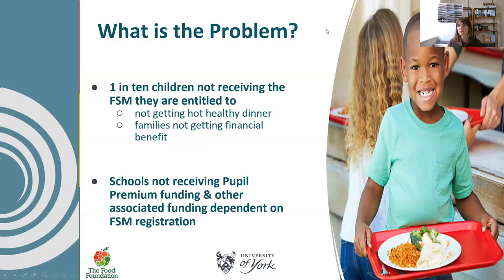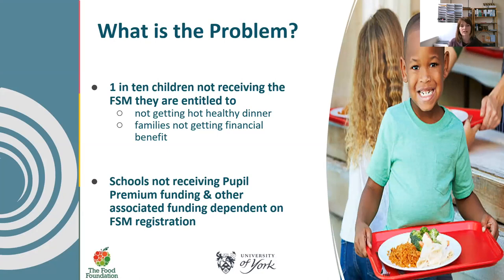About one in ten children don't receive the free school meals they are entitled to, and therefore fail to get that hot, healthy dinner that is often the only hot, healthy dinner they will get that day. Because of the extra cost of having to pay for lunches, families are not getting the financial benefit. Added to that, because there is a pupil premium linked to free school meals, schools also don't get the funding associated with that, as it depends on the registration of it.